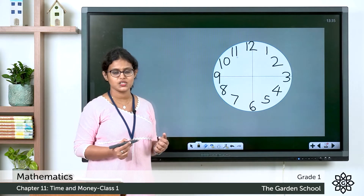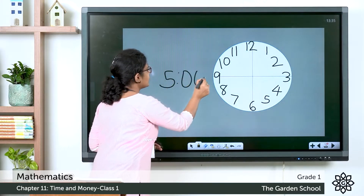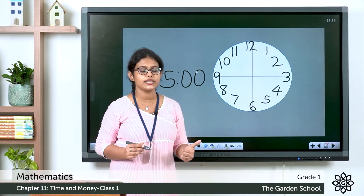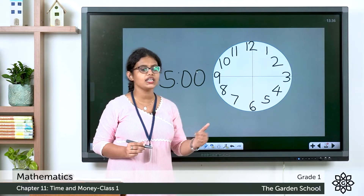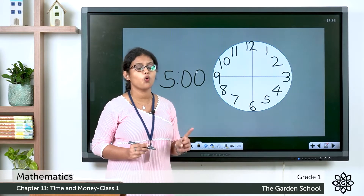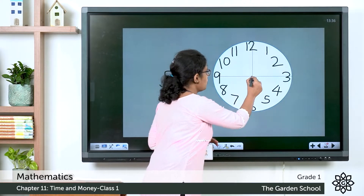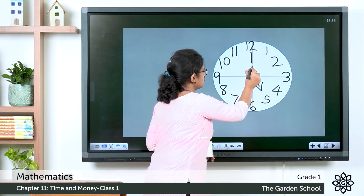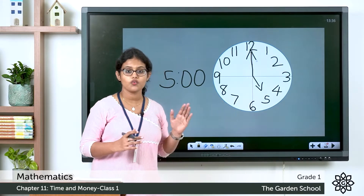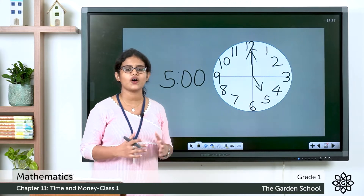We are going to set the time 5 o'clock on this clock. We learnt that the hour hand tells what hour it is — the minute hand is the long hand and the hour hand is the short hand. The small hand points to 5 and the minute hand, the long hand, points exactly to 12. So it is 5 o'clock.